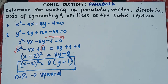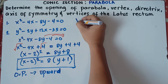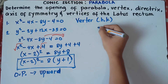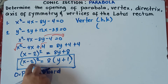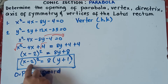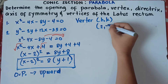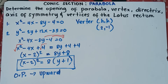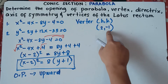Next, vertex. The vertex is (H, K). Our H comes from (x minus 2), so H is positive 2 — you take the additive inverse. And K comes from (y plus 1), which is (y minus negative 1), so K is negative 1. Therefore, the vertex is (2, negative 1).